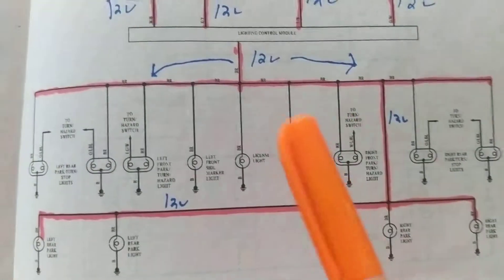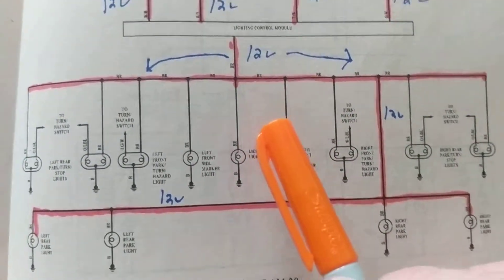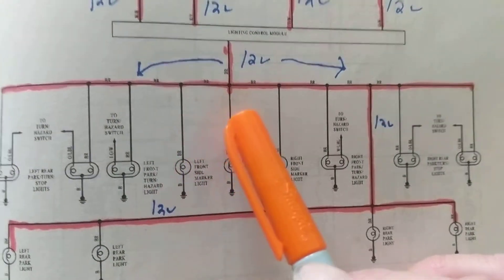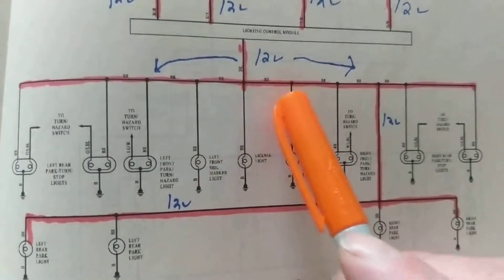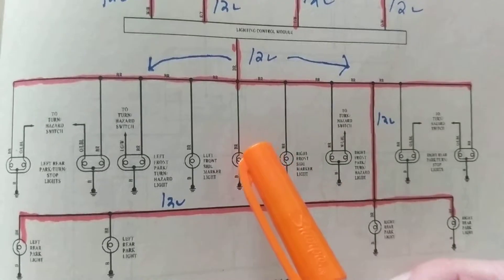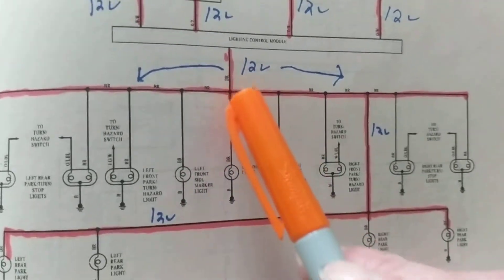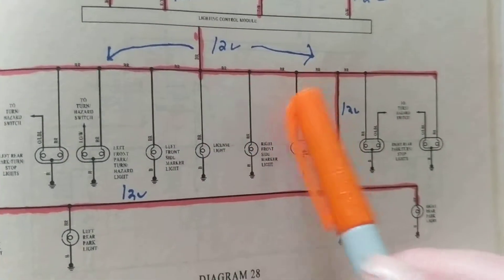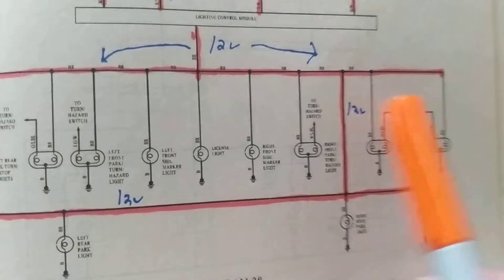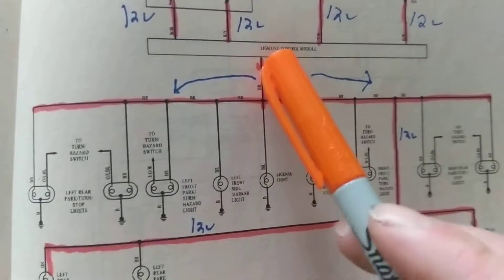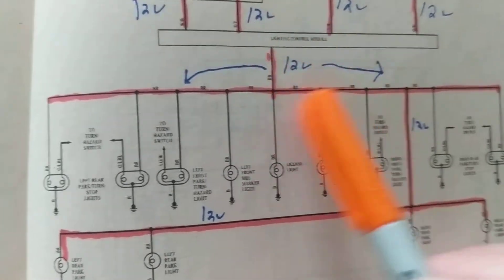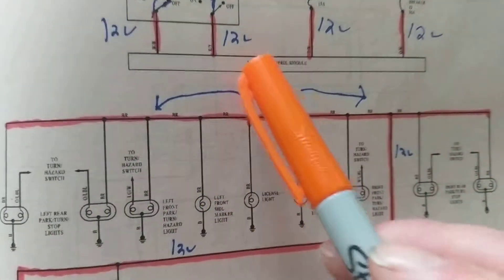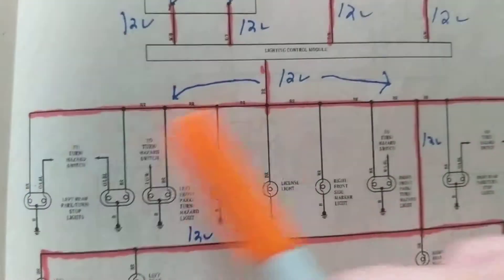Let's simplify that. If the open would be in one individual branch, it would affect only that one bulb. If the open would be in a shared branch, it would affect the bulbs on that branch. If the open would be at the common point, it would affect all of them, because this is the common that goes to all of them.